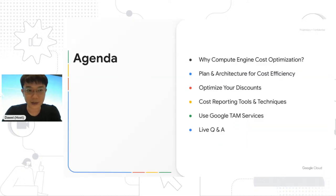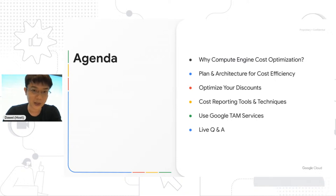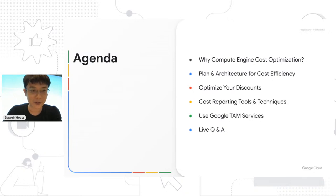This is the agenda today. We'll talk about why we need Compute Engine cost optimization, and we'll cover planning and architecture for cost efficiency. We'll also discuss CUDs and SUDs — optimizing your discounts — and important cost reporting tools and techniques. We'll also cover Google Time Services and premium support, and we have a live Q&A session. We've already received five or six pre-submitted questions, and you can leave new questions in the live chat.